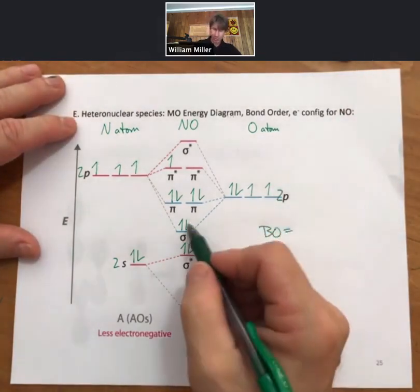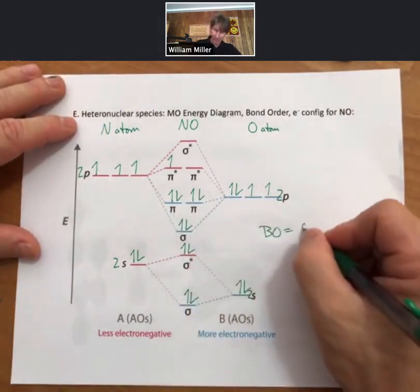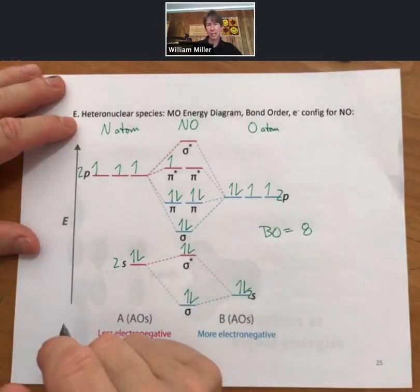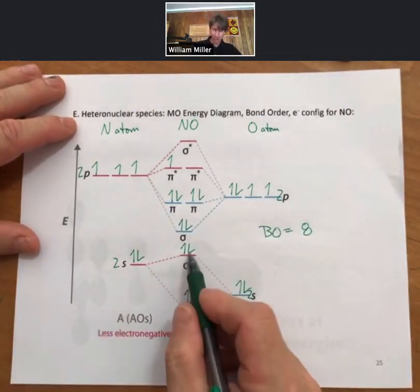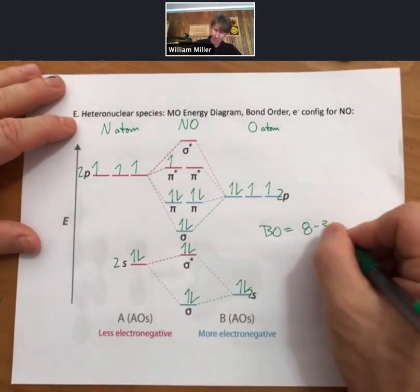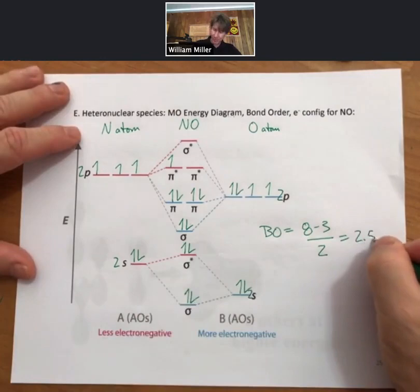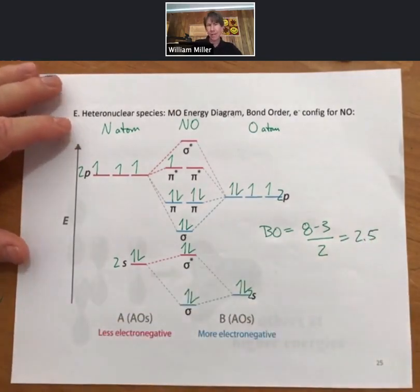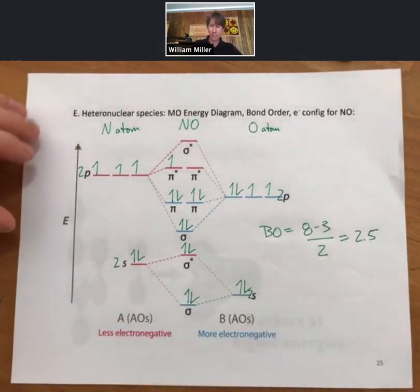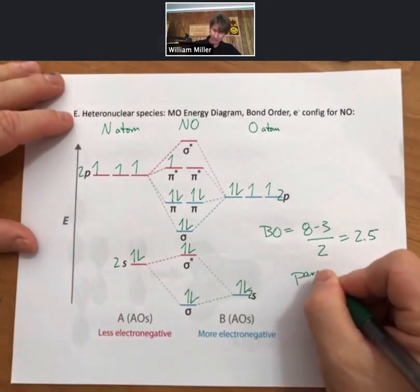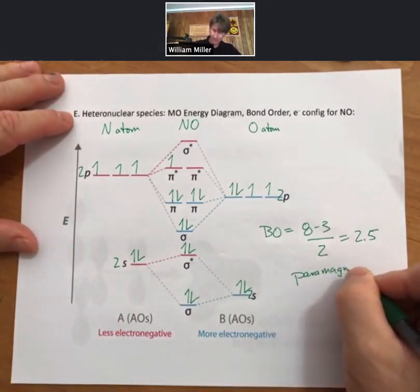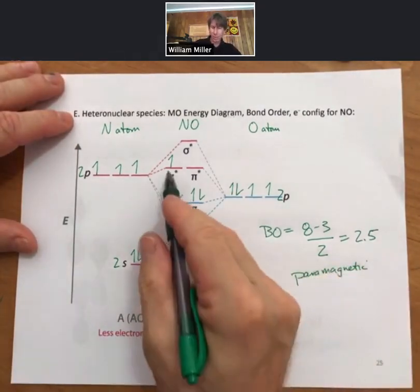Now bond order for this. We have one, two, three, four, five, six, seven, eight bonding electrons. We have one, two, three antibonding electrons. Divide that by two and you get 2.5.